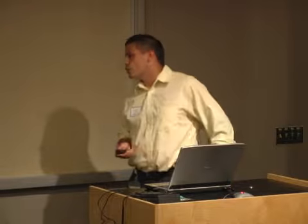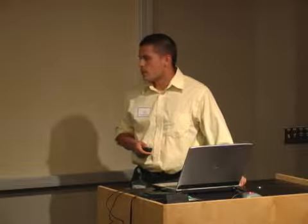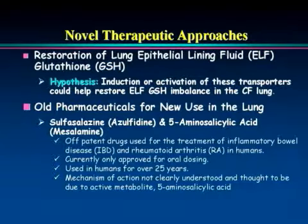Glutathione is decreased in a number of lung disorders such as cystic fibrosis, idiopathic pulmonary fibrosis, acute respiratory distress syndrome, AIDS, lung transplants, COPD, asthma, and chronic obstructive lung disease — all associated with excess oxidative stress. We hypothesize that the induction and activation of glutathione transporters can help restore epithelial lining fluid glutathione imbalance in the CF lung.